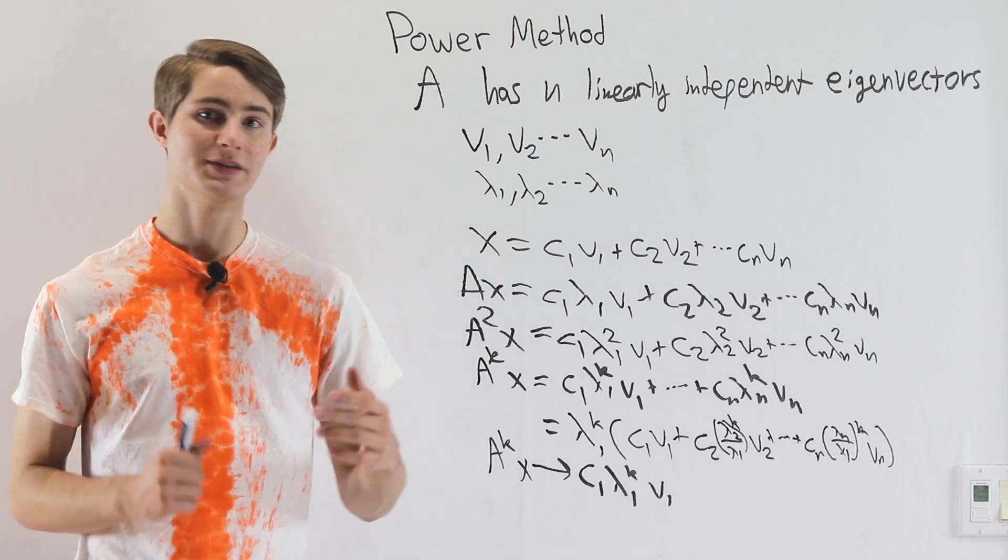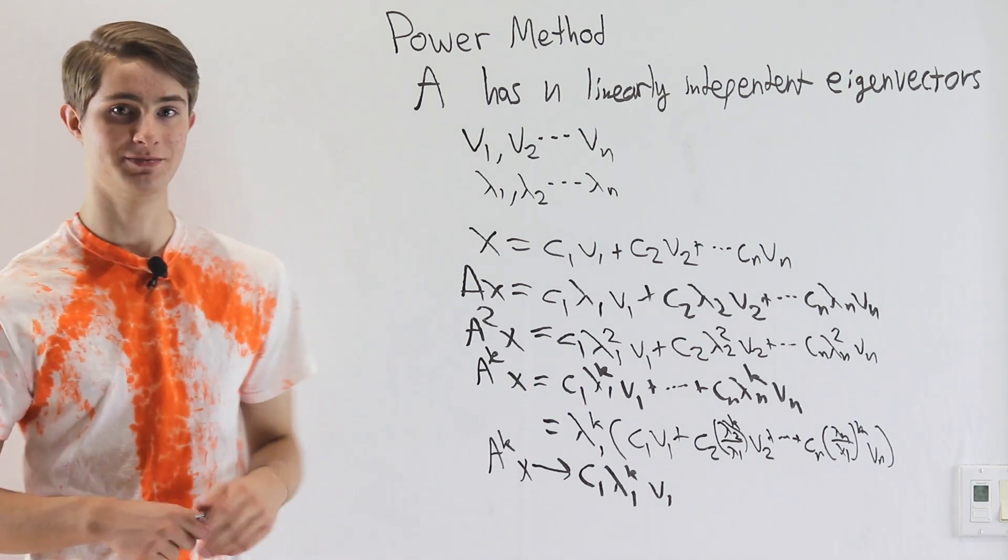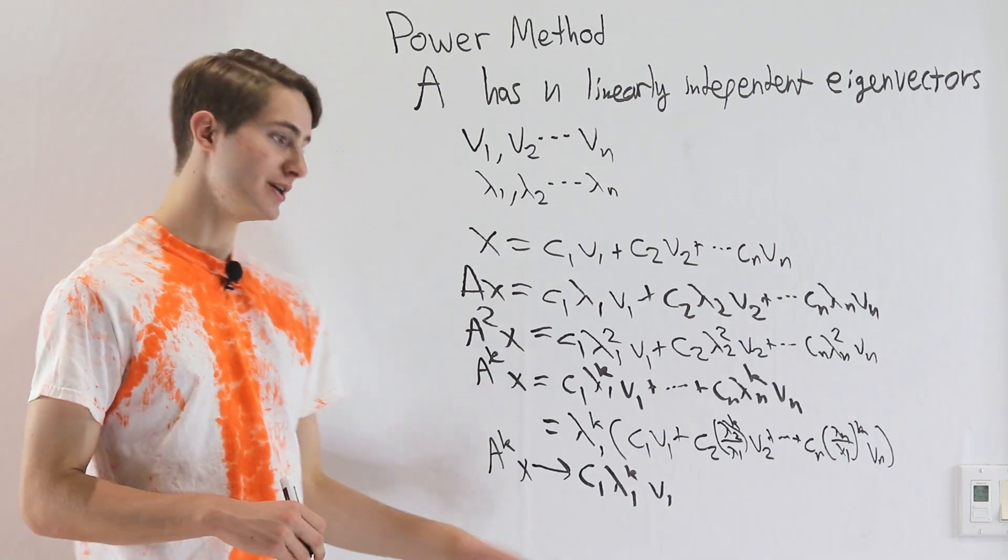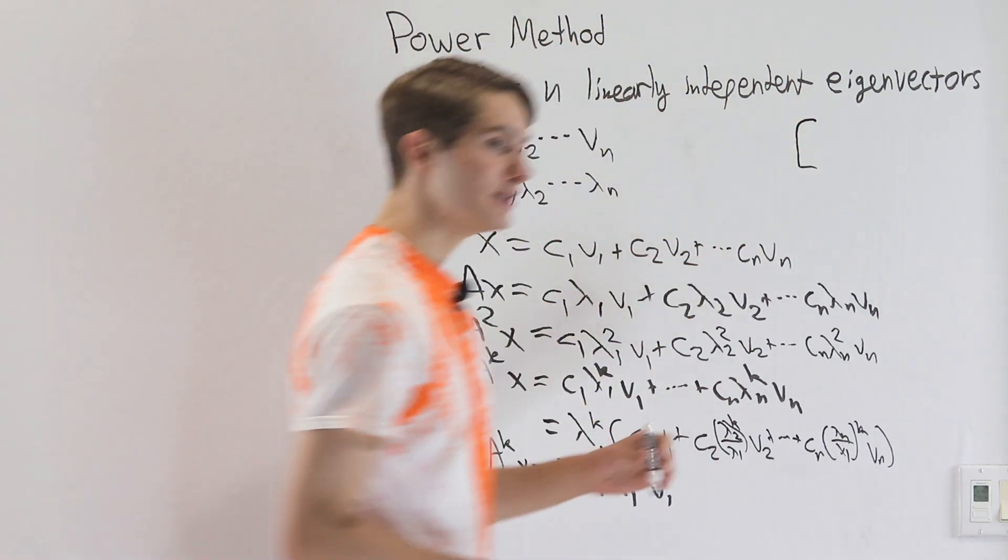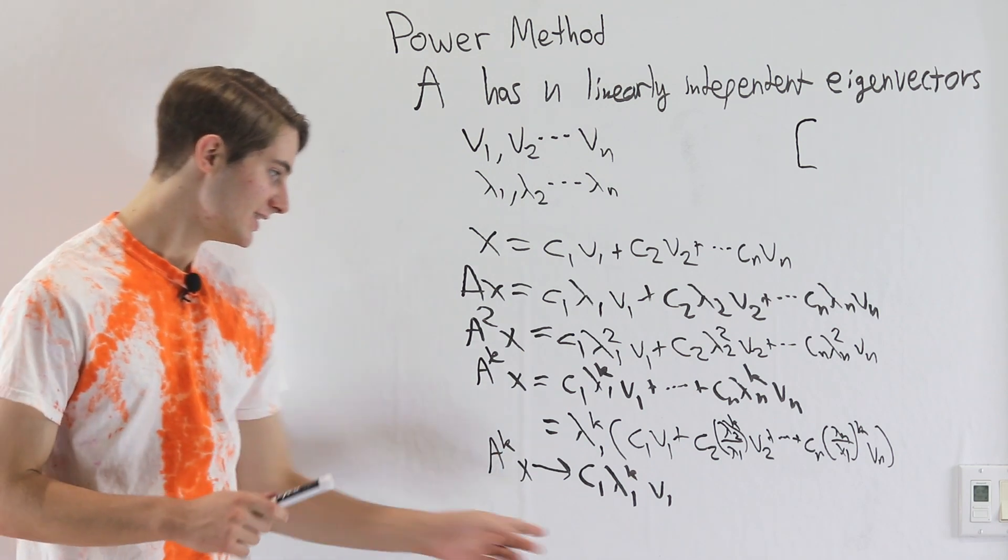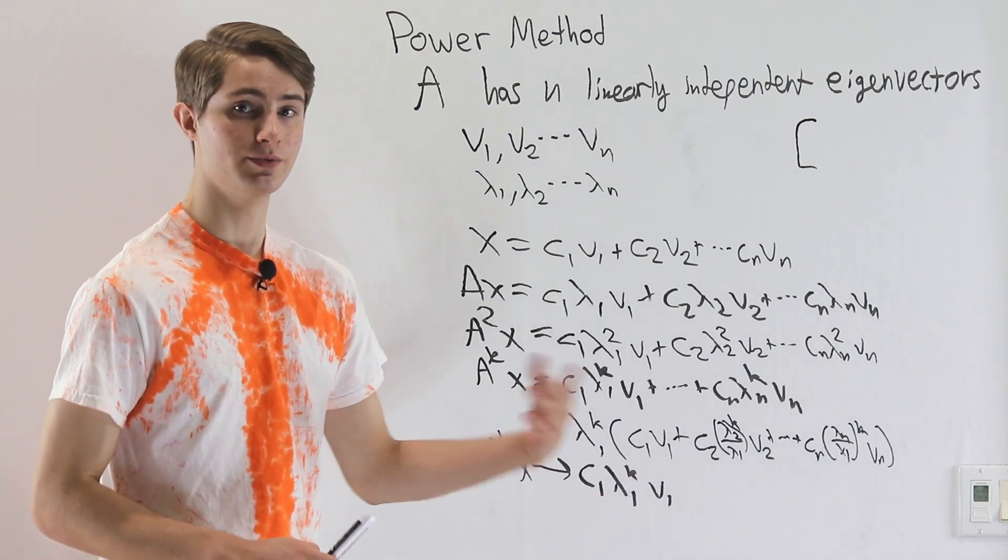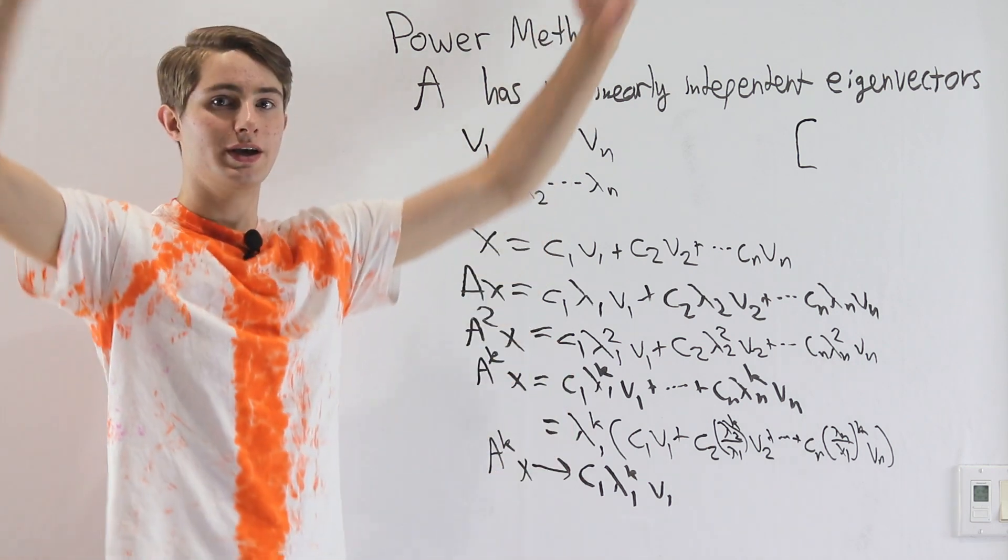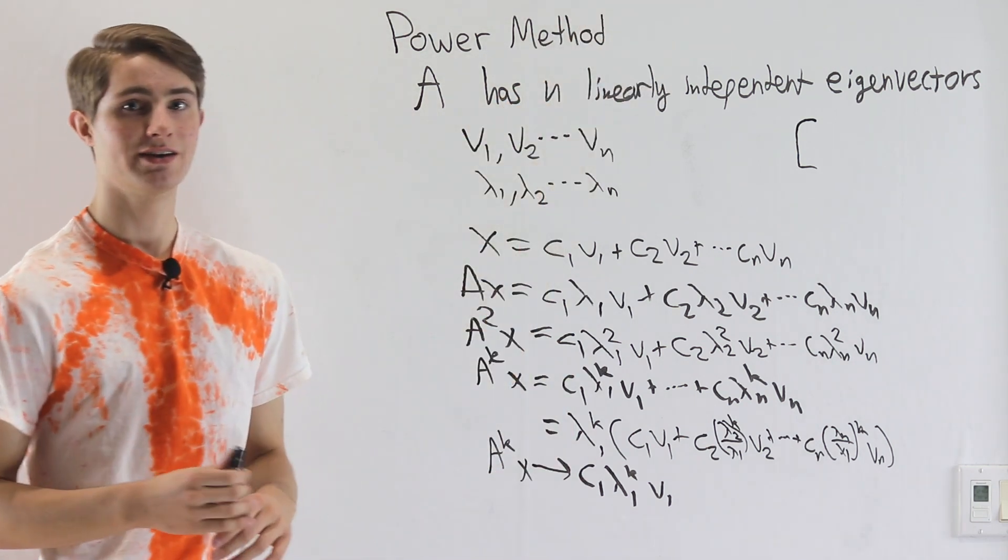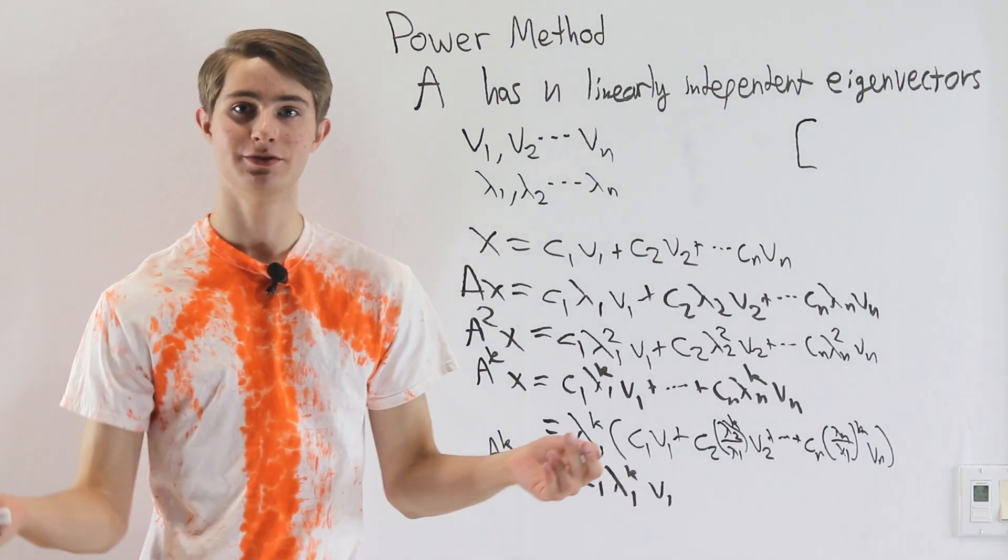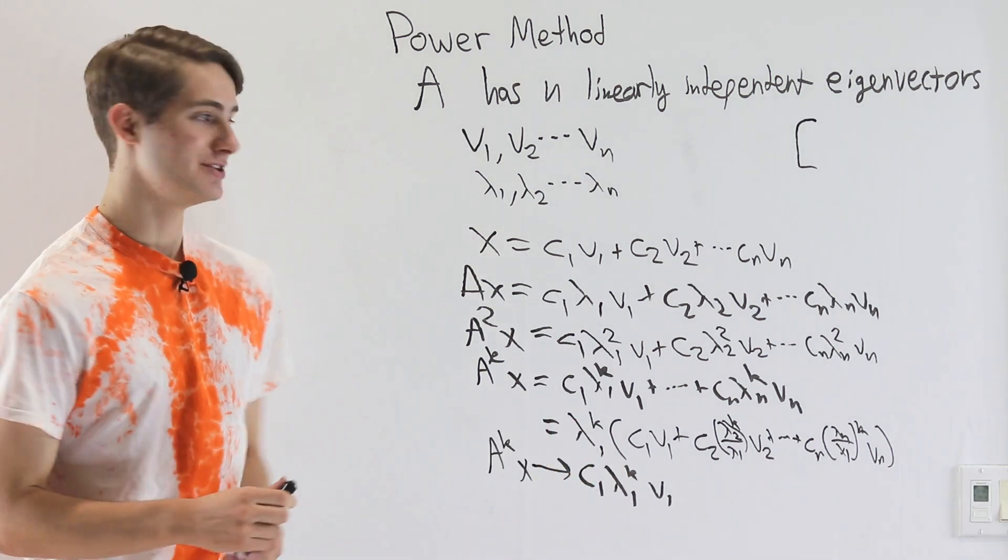So in this case, this would be something you would do in Excel or MATLAB or something like that. One thing to note if you want to apply this method is that usually the problem with this is if your eigenvalue is greater than 1, then this term is going to start blowing up to infinity as you multiply by A over and over again. So your eigenvector is going to be something like 1 billion, 3 billion, which is kind of annoying to deal with.